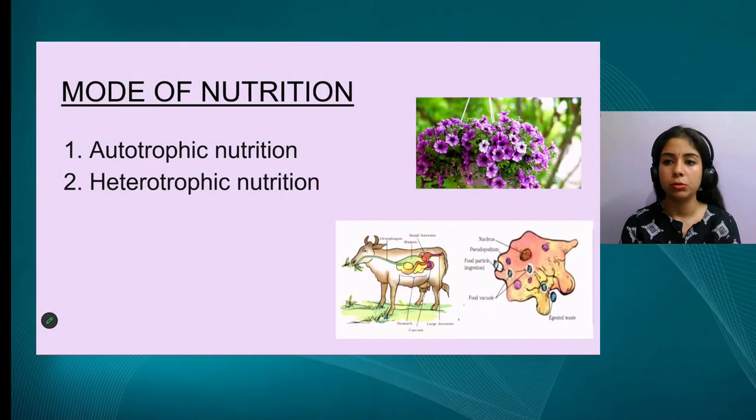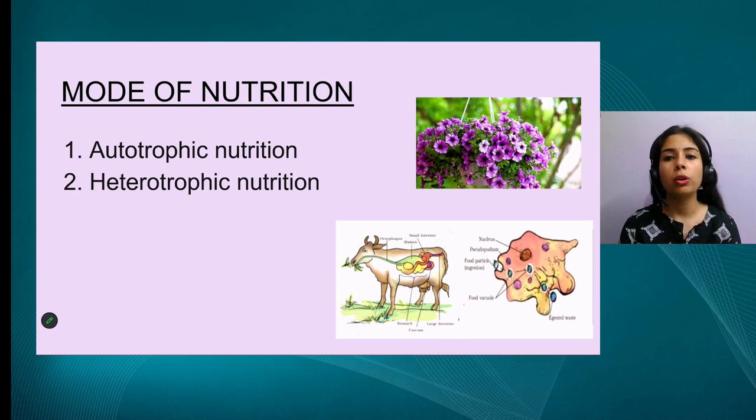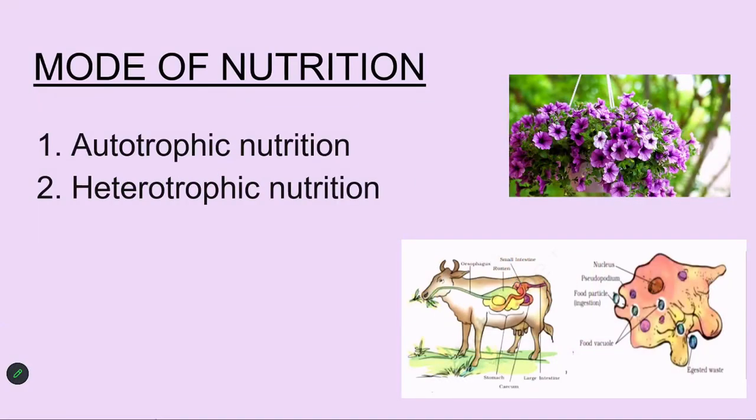There are two types of modes of nutrition: autotrophic nutrition and heterotrophic nutrition. Breaking down the word 'autotrophic' — auto means on their own, and trophic means to synthesize something. So organisms which can synthesize food on their own are known as autotrophs, and their mode of nutrition is autotrophic nutrition. For heterotrophic, breaking it down: hetero means depending on other organisms.